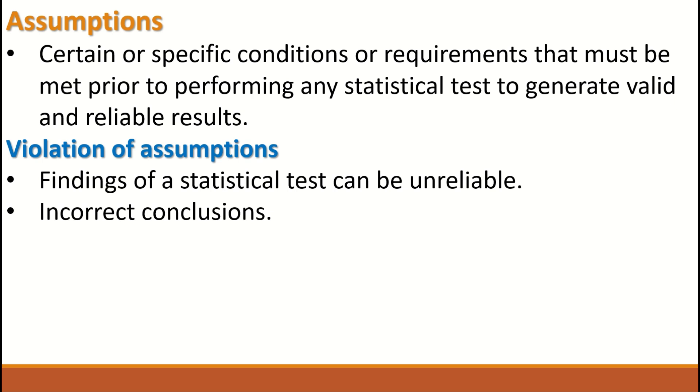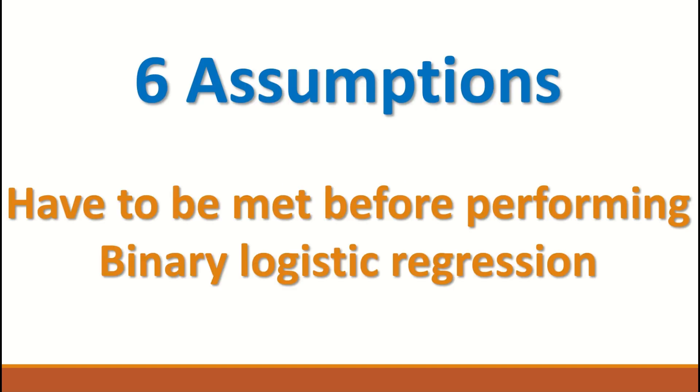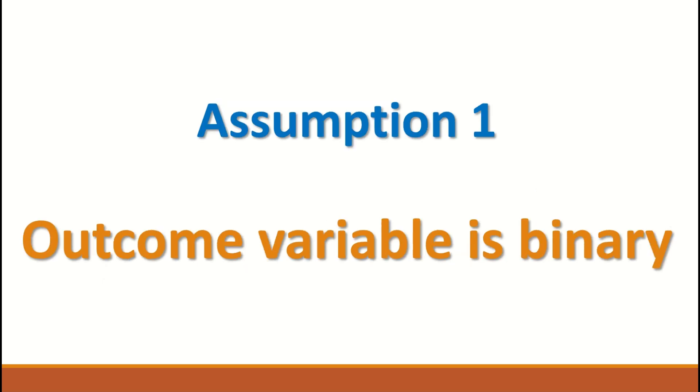Any violation of these assumptions can lead to unreliable results, can cause incorrect conclusions, and end up with the wrong conclusion based on wrong output from a test that the data should not be used for. For binary logistic regression, six major assumptions have to be fulfilled or met prior to doing the test.